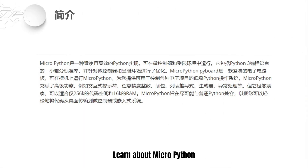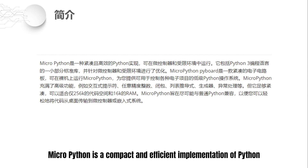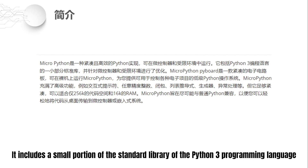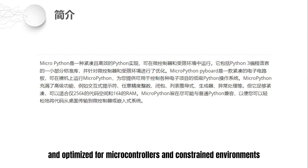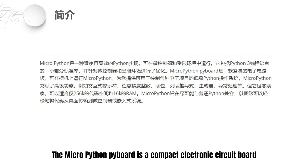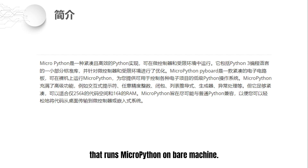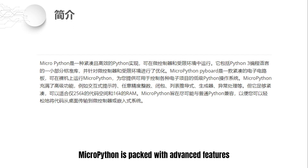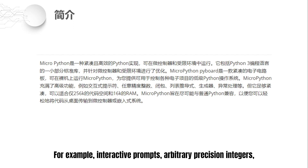Let's learn about MicroPython. MicroPython is a compact and efficient implementation of Python that operates on microcontrollers and constrained environments. It includes a small portion of the standard library of the Python 3 programming language, optimized for microcontrollers and constrained environments. The MicroPython PyBoard is a compact electronic circuit board that runs MicroPython on bare machine, providing a low-level Python operating system that allows users to create a variety of electronic projects. MicroPython is packed with advanced features.